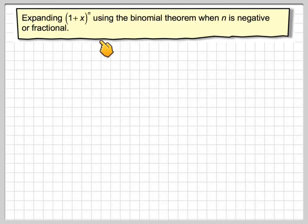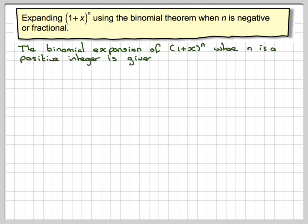Expanding (1 + x)^n using the binomial theorem when n is negative or fractional. The binomial theorem or binomial expansion of (1 + x)^n where n is a positive integer is given by: